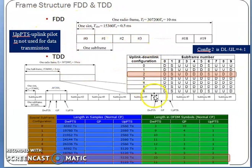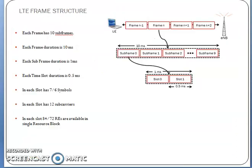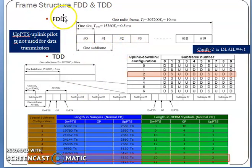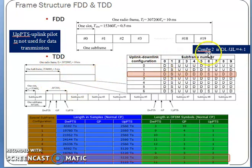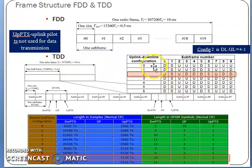Regarding frame structures: one frame equals 10 subframes, one subframe equals two slots. In FDD, two different frequencies are used for uplink and downlink. In TDD, one frequency is used for both. TDD configurations include UpPTS and DwPTS — uplink pilot time slot and downlink pilot time slot. Here is an example of uplink/downlink configurations in TDD.